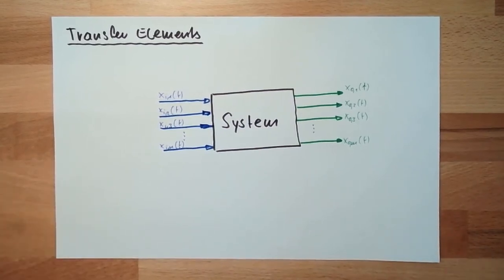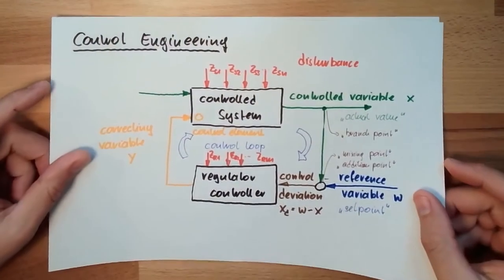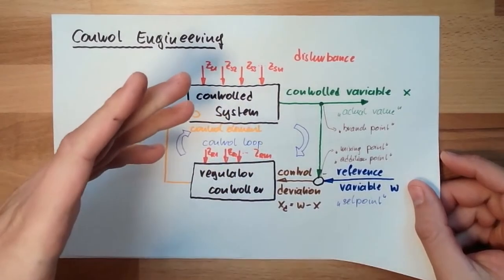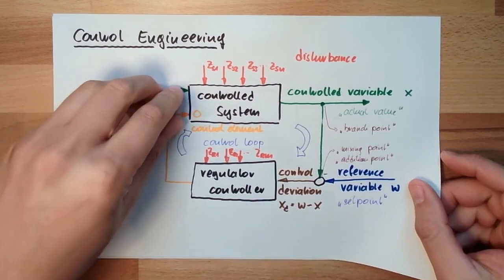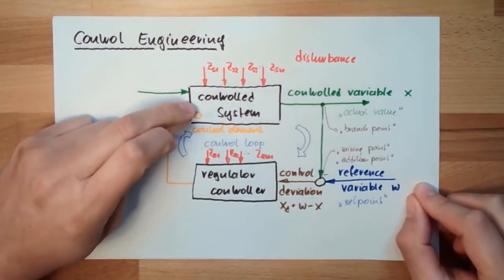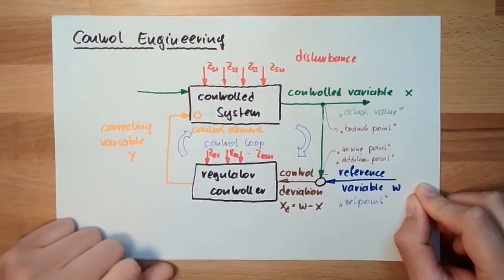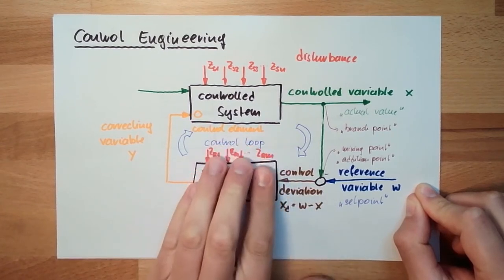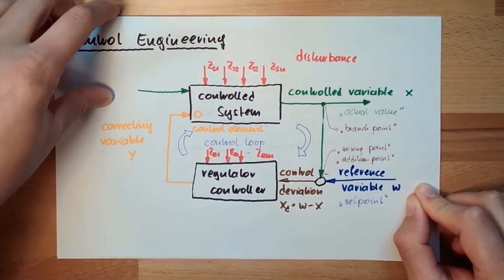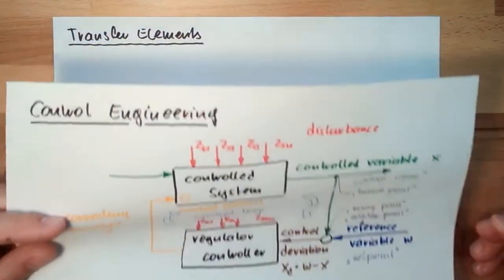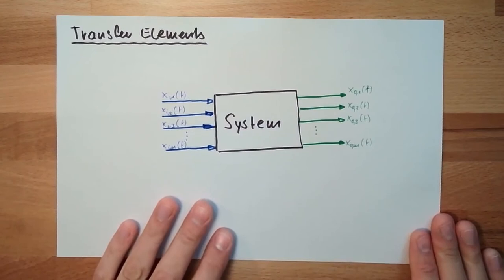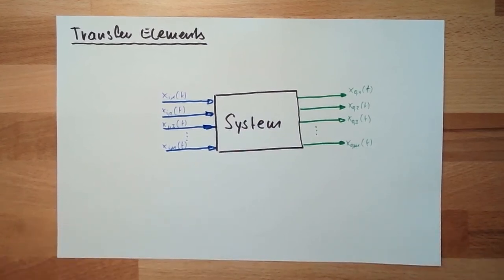Thinking about our control engineering, our control loop, this picture again. This and this might be systems. They can be seen as systems. Something is going inside, something is coming out. So the control system, for instance, there is the correcting variable, there are disturbances. These are all inputs to the control system. And the output is the controlled variable. On the controller itself, inputs are controlled deviation and disturbances. Output is the correcting variable. These are inputs and outputs according to systems theory. And this is what we are going to talk about.